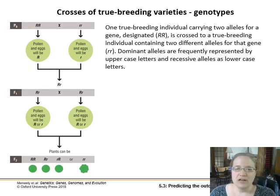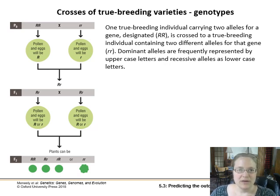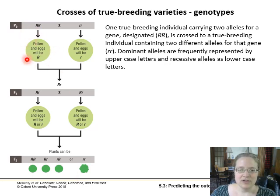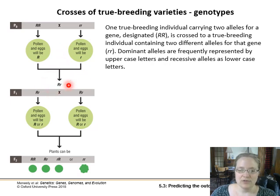When we take our true breeding varieties — the dominant variety and the recessive trait variety — we've got pollen and eggs that can only carry the dominant trait, and then pollen and eggs that have the recessive trait. We cross them and that gets us a heterozygote in the F1 generation, the filial one generation.